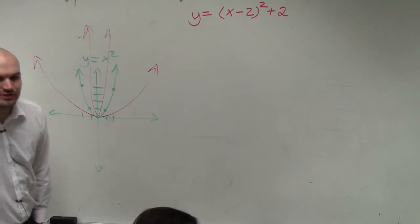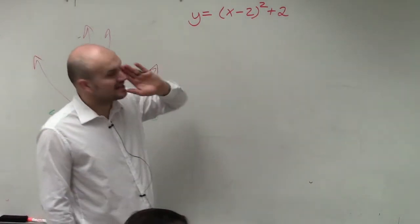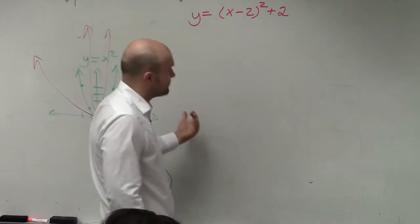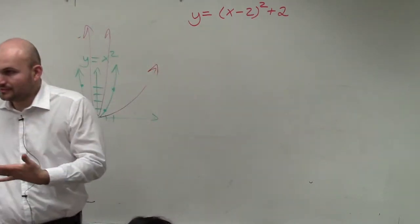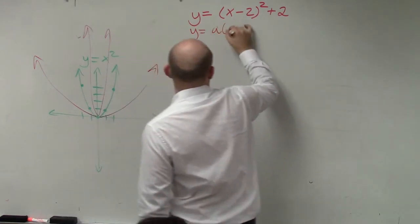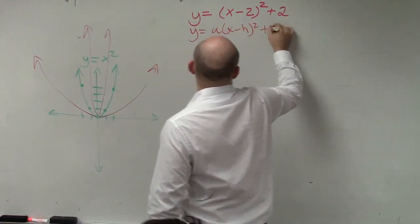So ladies and gentlemen, what I want to show you how to do here is I have y equals x minus 2 squared plus 2. And so to graph this in vertex form, we need to remember again what is our vertex form. Our vertex form is y equals a times x minus h squared plus k.